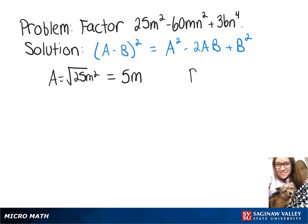And then our B would be equal to the square root of our last term, and that would give us 6n squared.